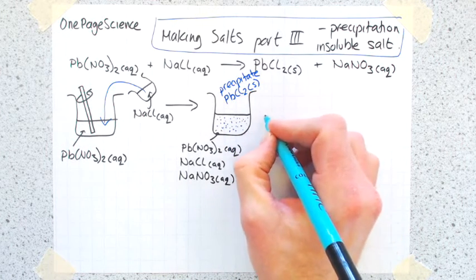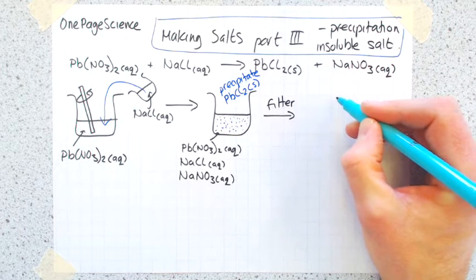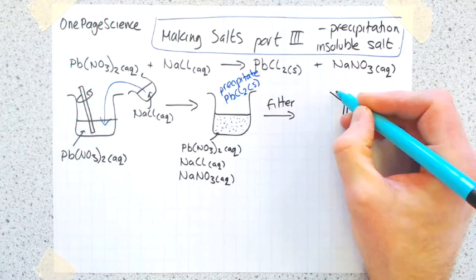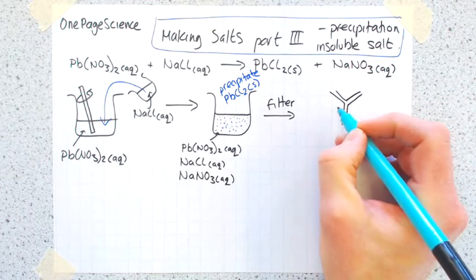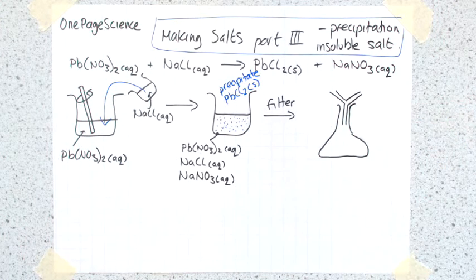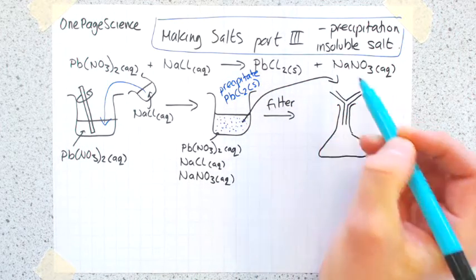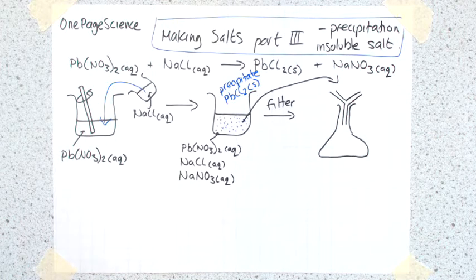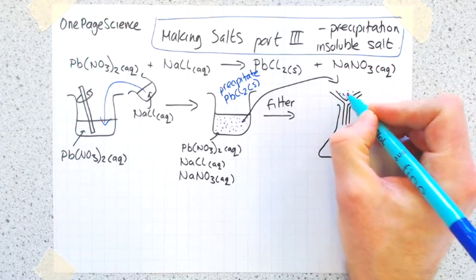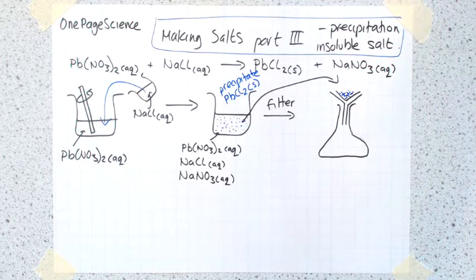The way you do that is filtration. To do a filtration you need a funnel, filter paper, and a conical flask. Then you take this whole mixture and pour it into the top of your filter. What you'll get left with is all the bits of solid, all the blue stuff that we want, left in the top of the filter paper.